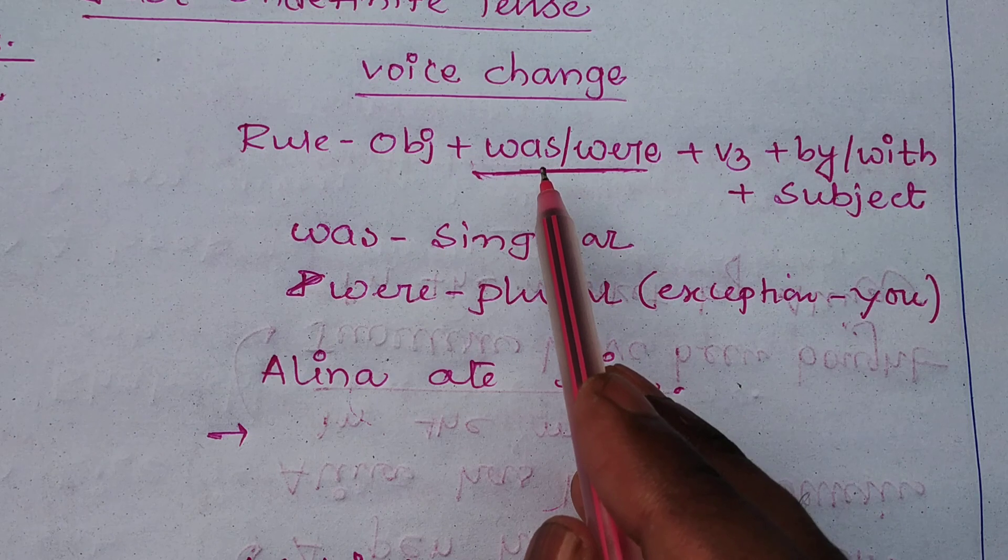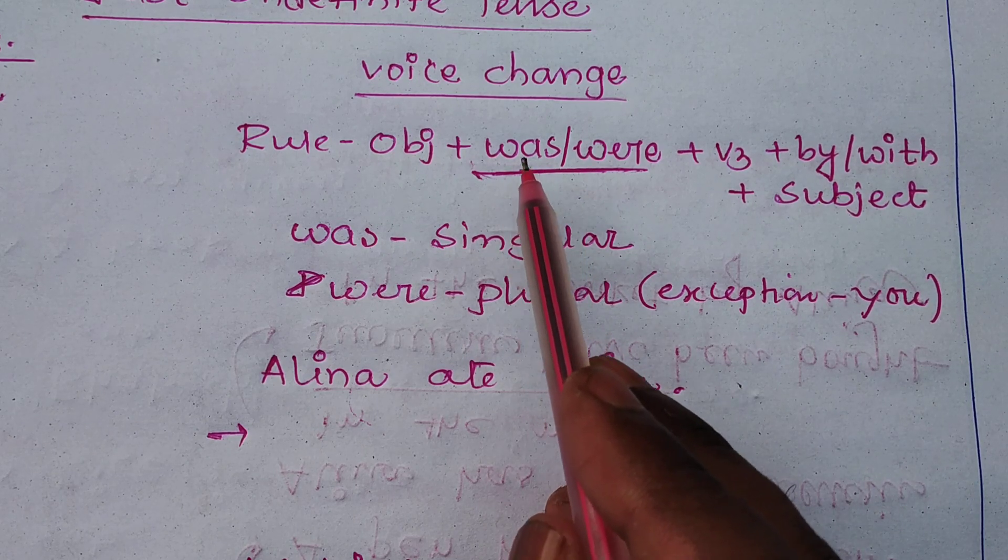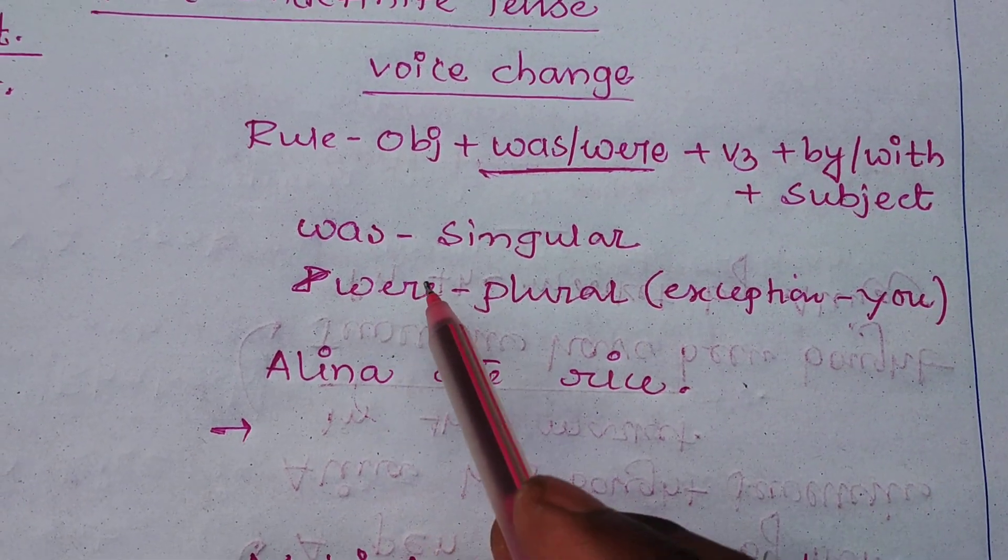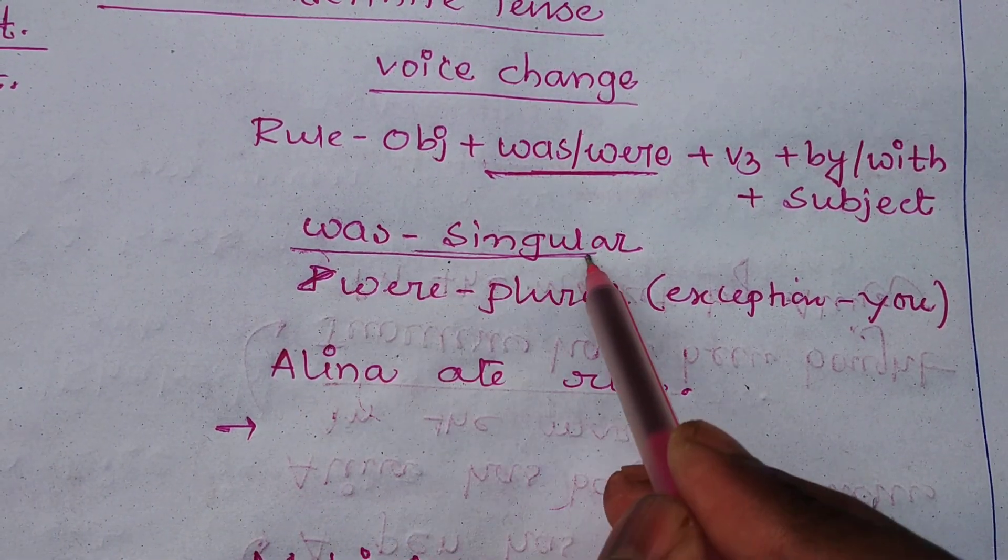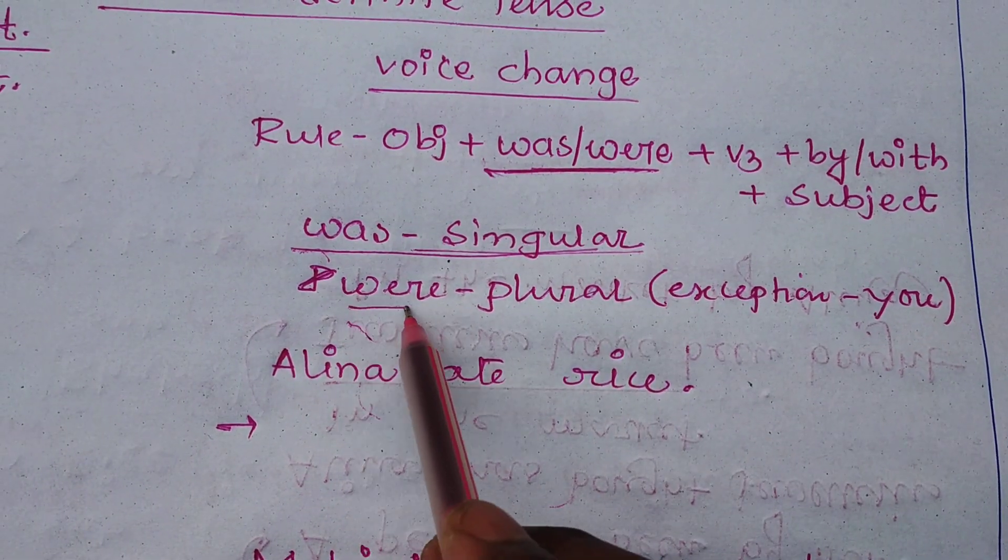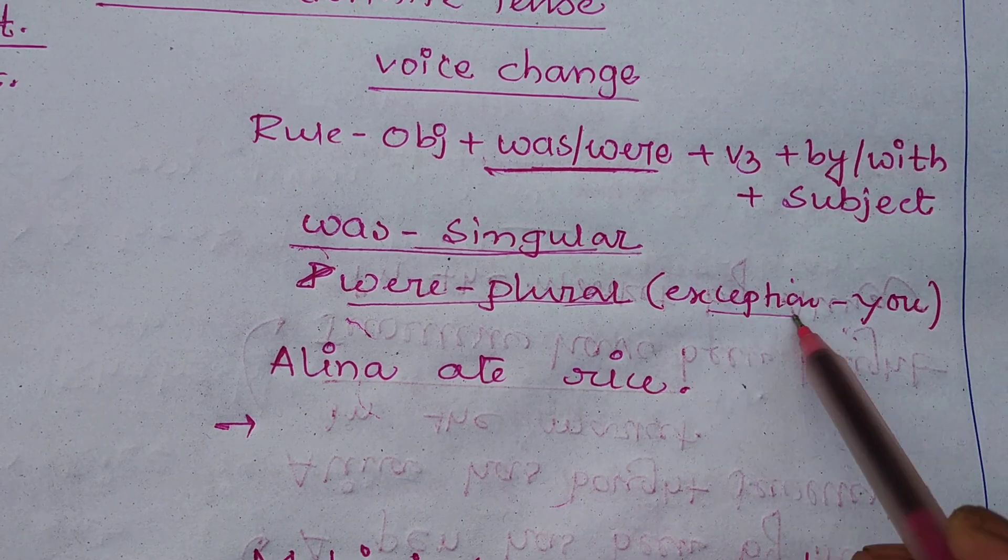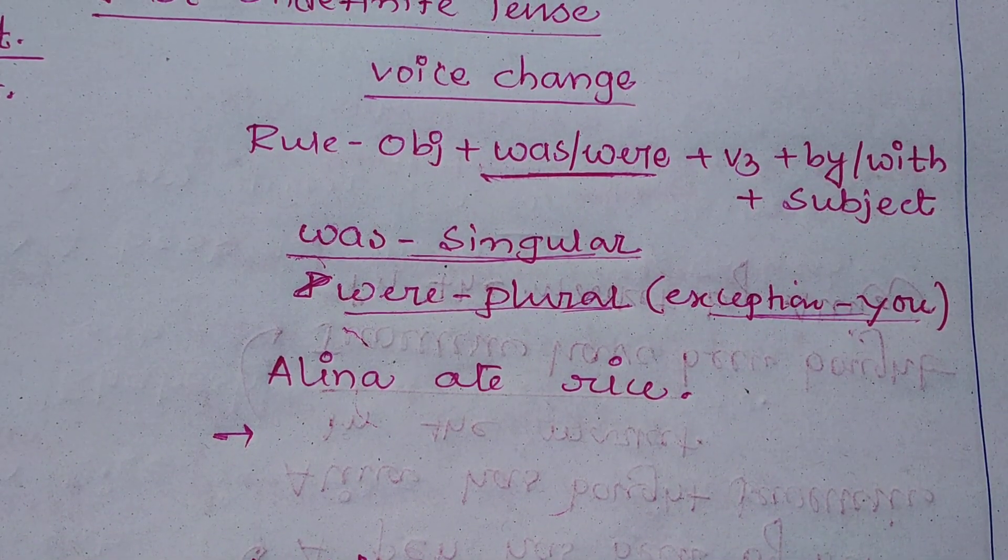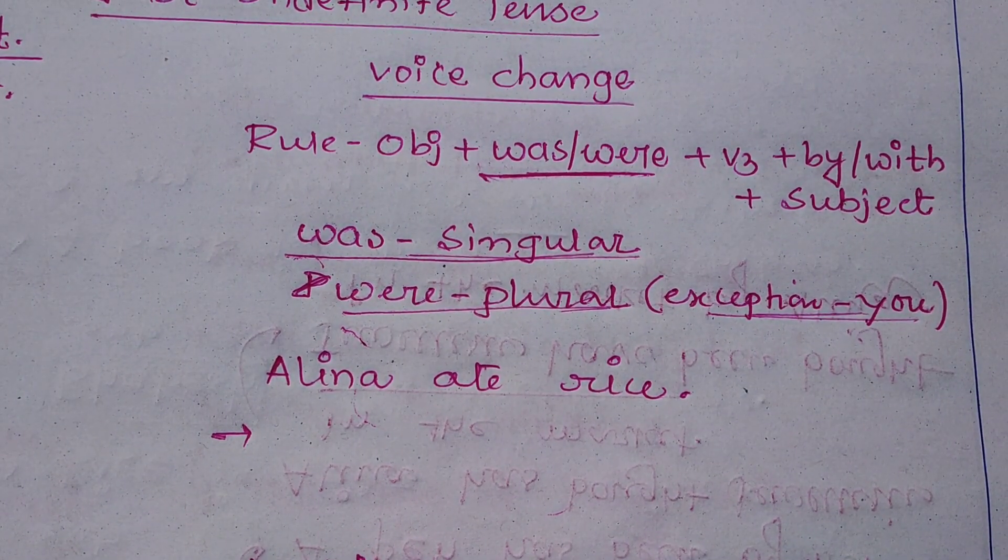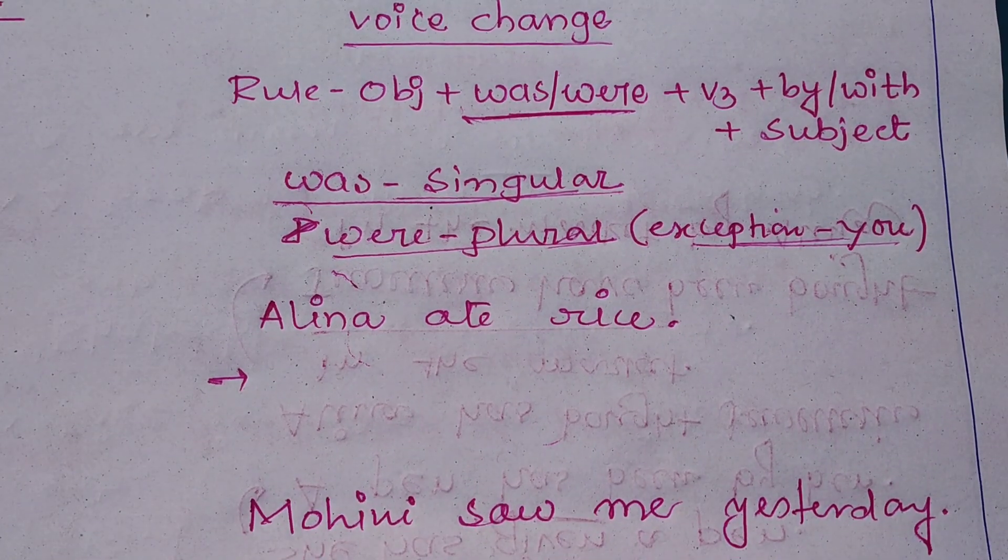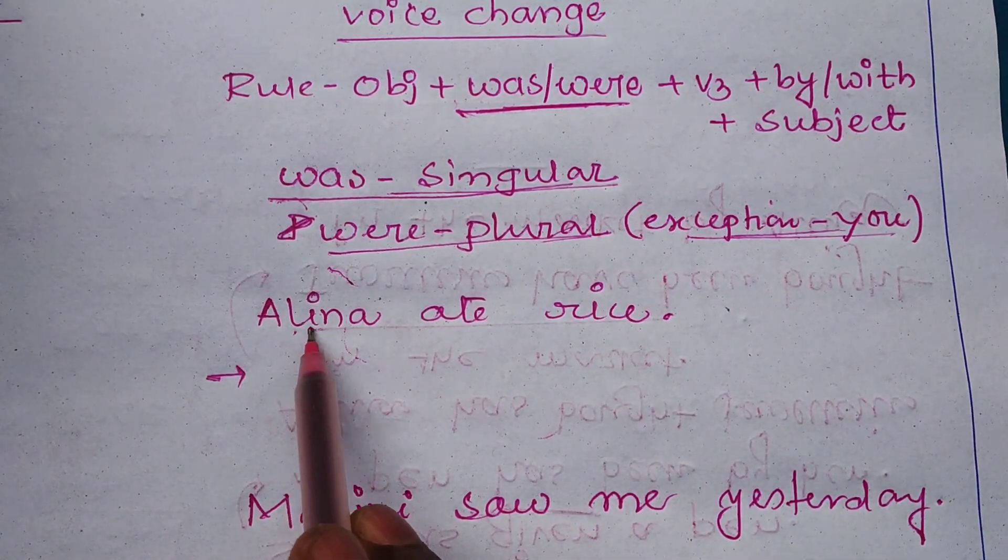But in past indefinite tense you can use was and were. Was was put after singular number and were puts after plural number. Ok, exceptional: you, there is always put were after you. So here is a sentence: Alina ate rice.